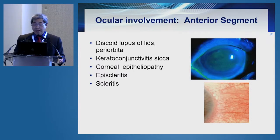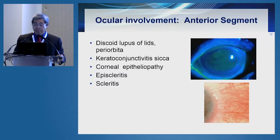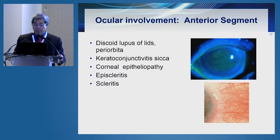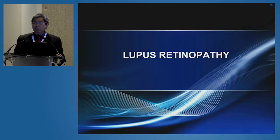Almost every part of the eye can be involved in lupus, starting from the skin and periorbital areas. Keratoconjunctivitis sicca or dry eye is a very important feature of SLE, and this can also lead to corneal damage, as well as episcleritis and scleritis. For the purposes of this talk, we'll be focusing on lupus retinopathy and choroidopathy.